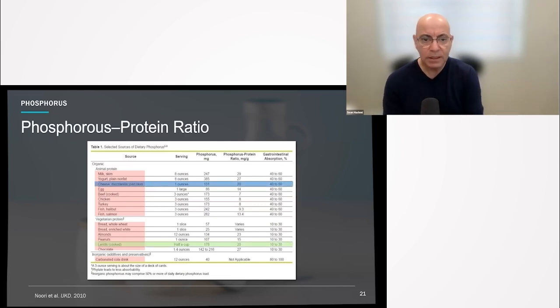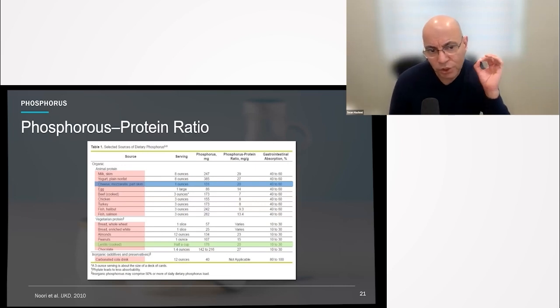For example, let's compare cheese versus lentils. If you were to compare cheese versus lentils, you would find the phosphorus-to-protein ratio on both of them is 20. From that perspective, you might say both of these are the same, so I can pick either one. But remember, when you look at absorption, you want the least absorption of phosphorus, which is plant-based.